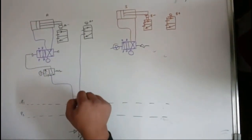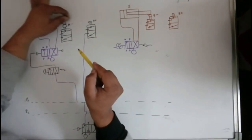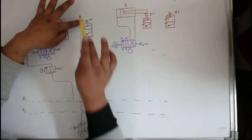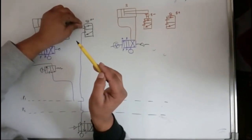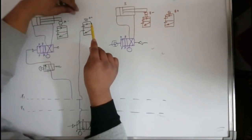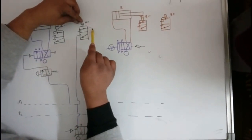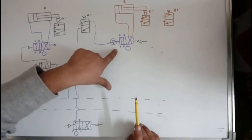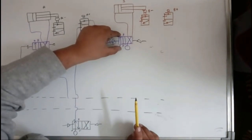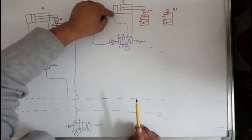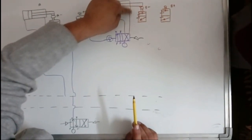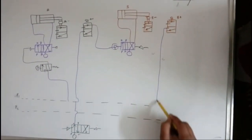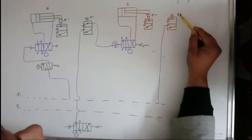When A+ position is reached, the piston's projection touches the roller limit switch, changing its position. This allows pressure to flow through and operate the pilot of cylinder B's valve. The position changes so pressure goes straight to the inlet, and cylinder B extends — achieving position B+, still powered from P1.